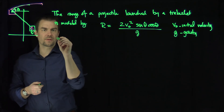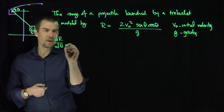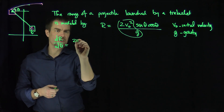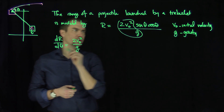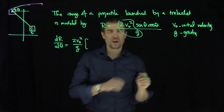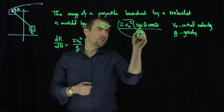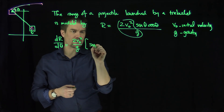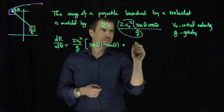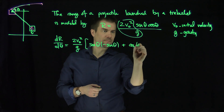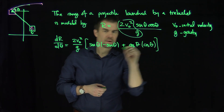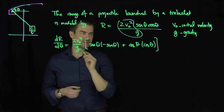So I've taken the derivative of r with respect to theta. dr/dθ is going to be: we pull these constants out, so that's 2v₀² over g, and then we use the product rule. We could have also used the double angle formula, but we're going to do the product rule for practice. It's the first function times the derivative of the second: sine of theta times the derivative of cosine, which is negative sine.